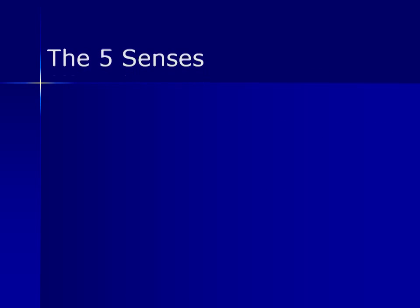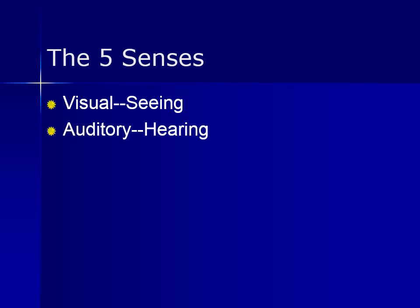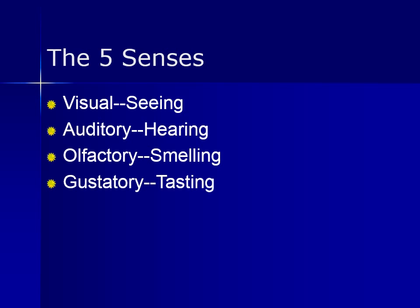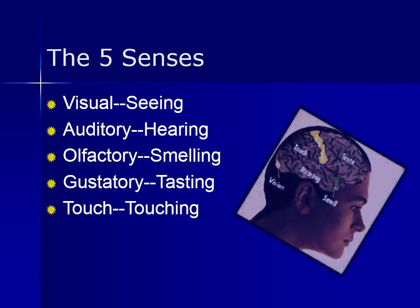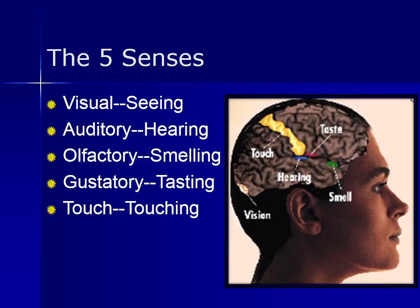Let's look at each of the five senses. We have the visual, or seeing; auditory, or hearing; olfactory, or smelling; gustatory, or tasting; and touching. As you can see in this image, each of the different senses are located in different areas of the brain.